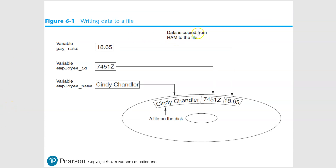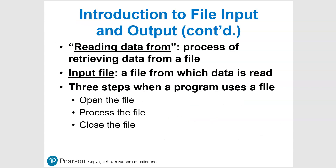So writing data to a file — we have variable names and we're putting this data in, and we're going to save it directly onto a disk. Imagine a hard drive or whatever device you might use to store things. That's what we're going to be writing to. I know this is not a big revelation to anyone, but I just want to talk about it really quickly.